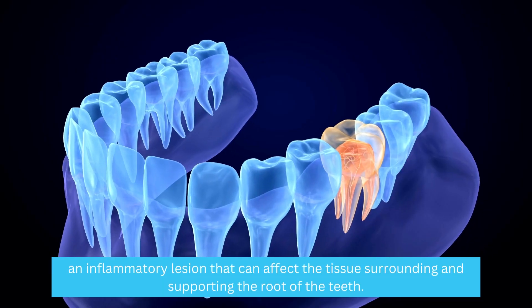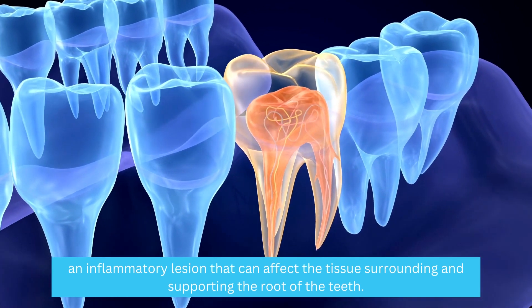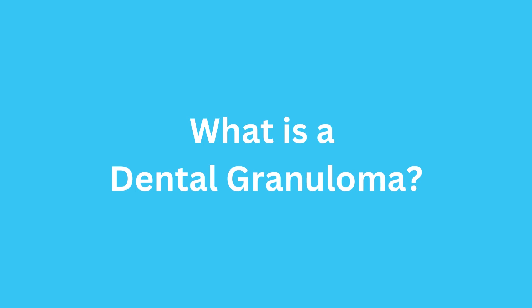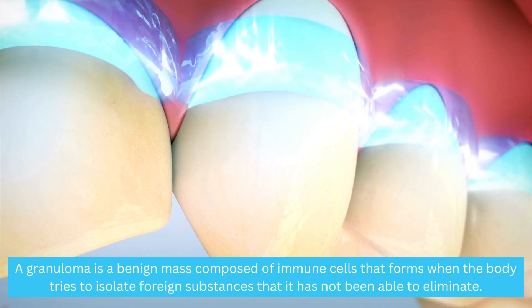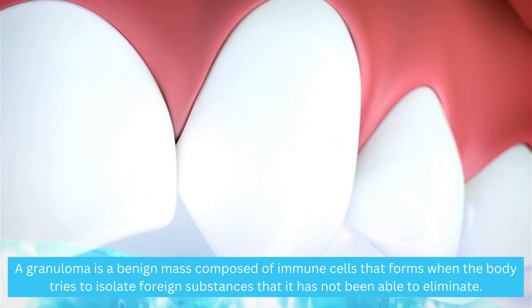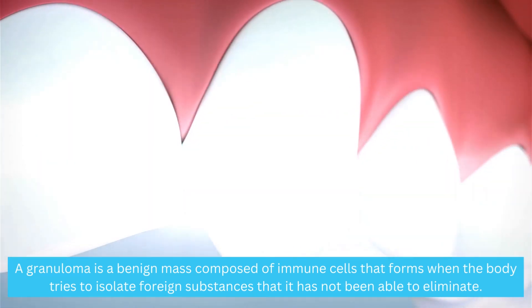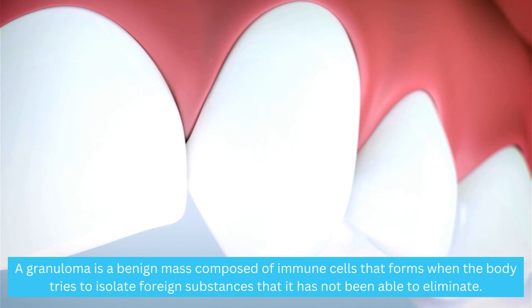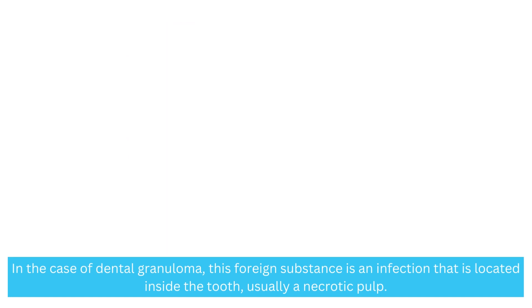Dental granuloma is an inflammatory lesion that can affect the tissue surrounding and supporting the root of the teeth. A granuloma is a benign mass composed of immune cells that forms when the body tries to isolate foreign substances that it has not been able to eliminate. In the case of dental granuloma, this foreign substance is an infection located inside the tooth, usually a necrotic pulp.